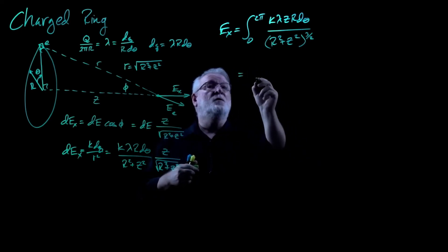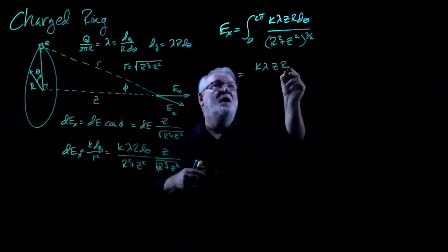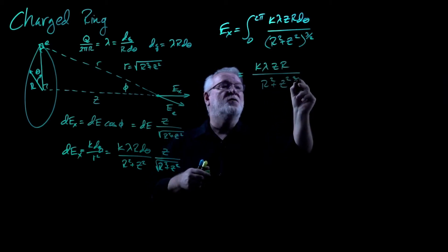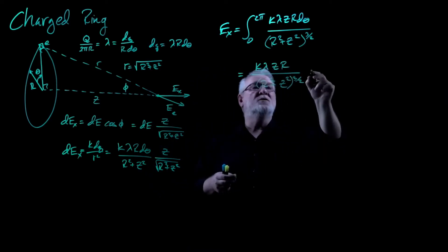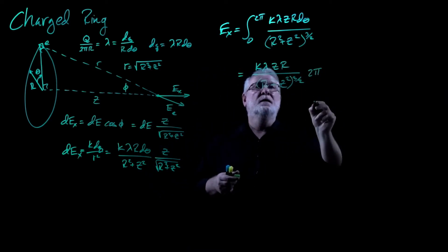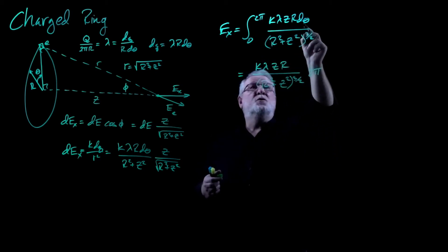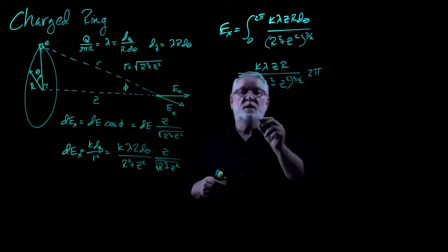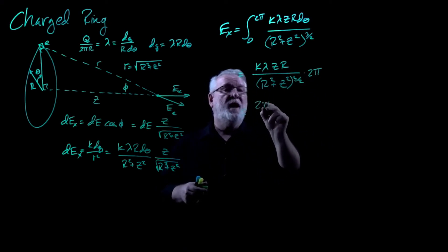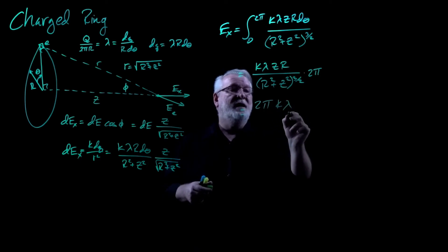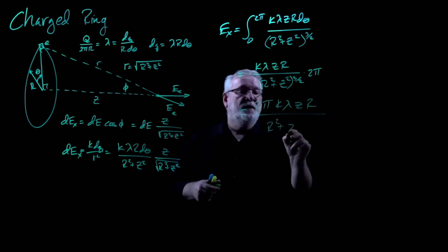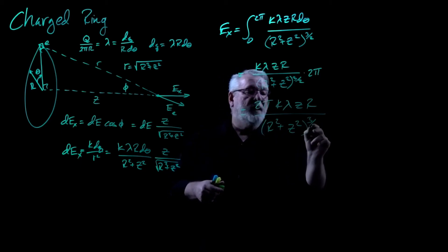So this is equal to K lambda Z R all over R squared plus Z squared to the three halves. And then all I need to do here is write 2π, because integrating from zero to 2π of dθ will simply produce that. So here's our final solution. It's 2π K lambda Z R all over R squared plus Z squared to the three halves.